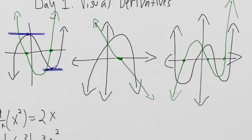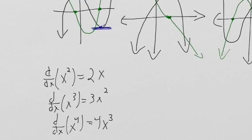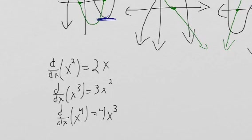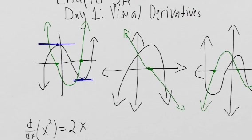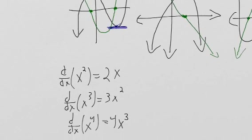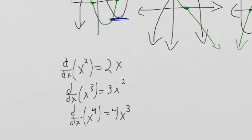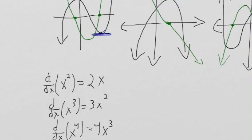So our visual derivatives actually end up relating to this power rule that we learned later in the unit. We can make this connection: what we'd expect for the visual derivative is consistent with what the power rule says. So now I'm going to put in a picture that would relate to some of the con questions we did — this gets a little bit tougher now.